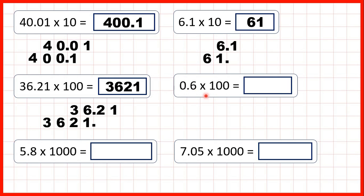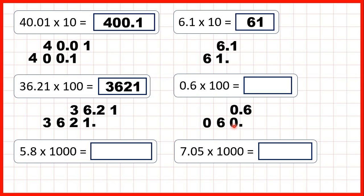Now we have 0.6, so we write the number out and copy down the decimal point. Multiplying by 100 means digits move 2 squares to the left — 100 has 2 zeros, so digits move 2 squares. When we multiply, the number gets bigger, so digits move left towards the larger place values. Moving the digits leaves an empty square before the decimal point, so we write a 0 there to show the 6 has moved to the tens column. That gives 060 with the decimal point on the end, which is the whole number 60.